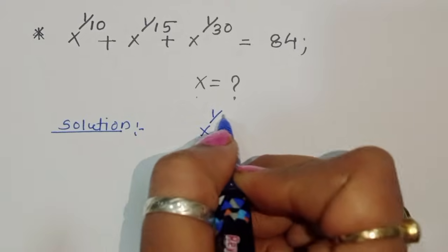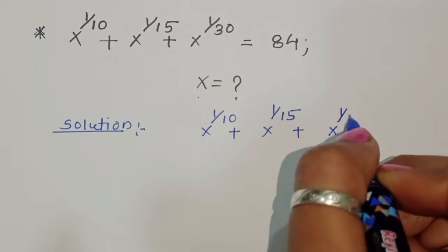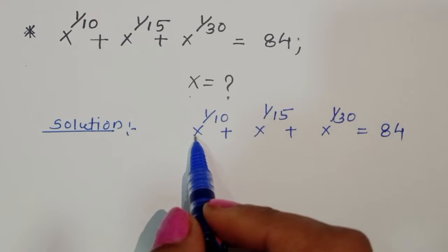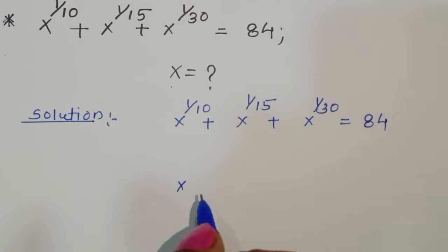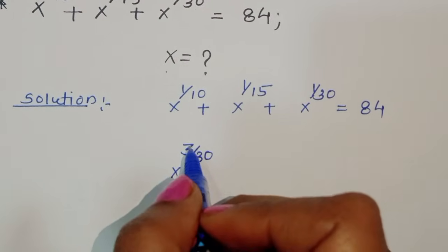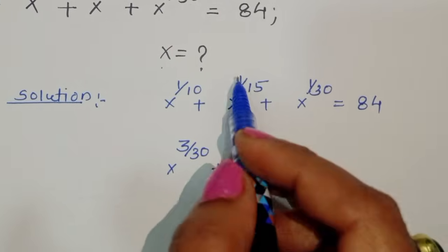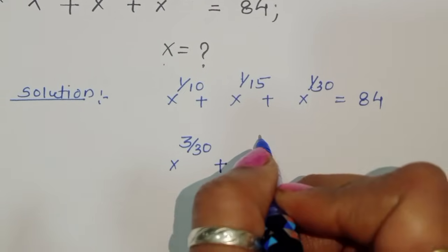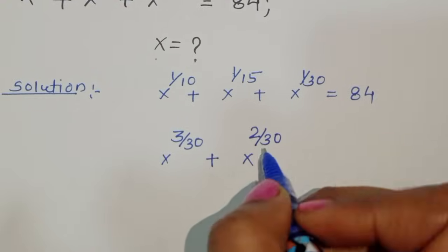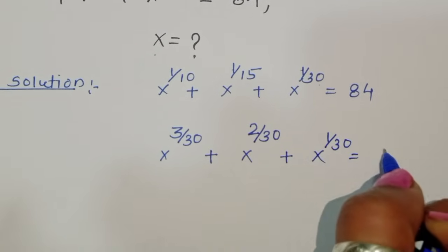So we have x to the power 1/10 plus x to the power 1/15 plus x to the power 1/30 equals 84. We can rewrite x to the power 1/10 as x to the power 3/30, and x to the power 1/15 as x to the power 2/30, taking the common base of 30. So we get x^(3/30) plus x^(2/30) plus x^(1/30) equal to 84.